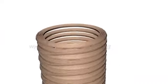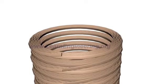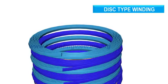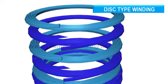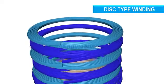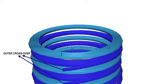Transformers with high power ratings generally employ a special kind of winding known as a disc-type winding, where separate disc windings are connected in series through outer and inner crossovers.